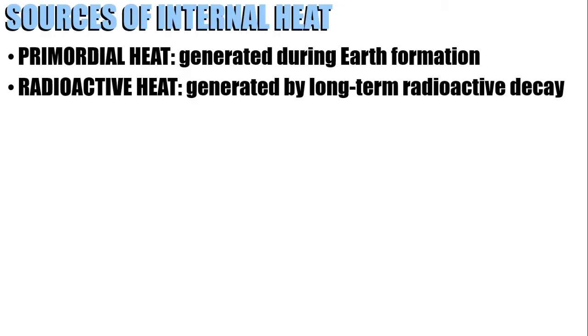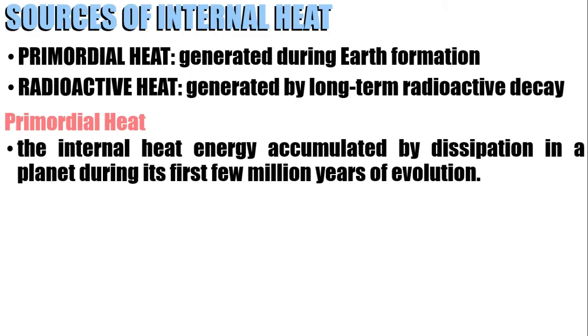Let's talk about primordial heat. This is the internal heat energy accumulated by dissipation in a planet during its first few million years of evolution. Basically, it's heat released from collision of planetary objects during the early formation of planets.